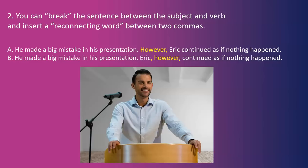Two: you can break the sentence between the subject and verb and insert a reconnecting word between two commas. For example: A. "He made a big mistake in his presentation. However, Eric continued as if nothing happened." B. "He made a big mistake in his presentation. Eric, however, continued as if nothing happened." This is a small variation on using reconnecting words.